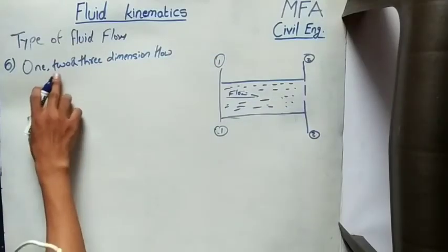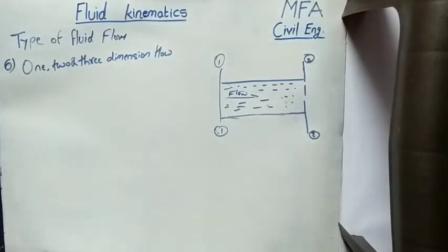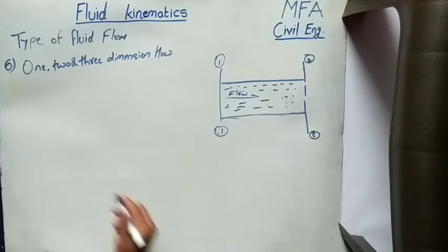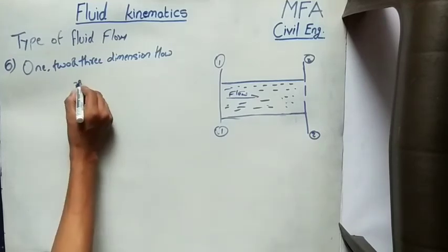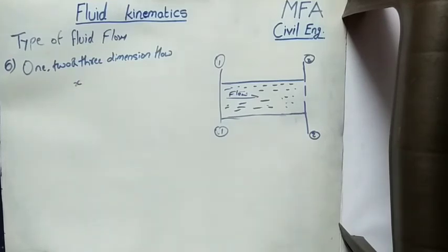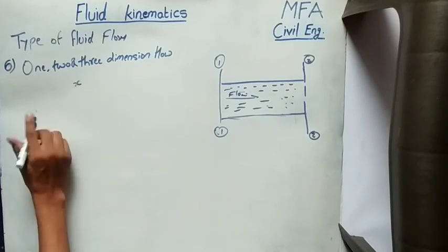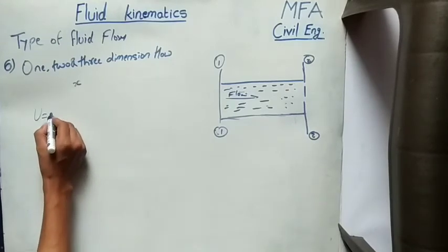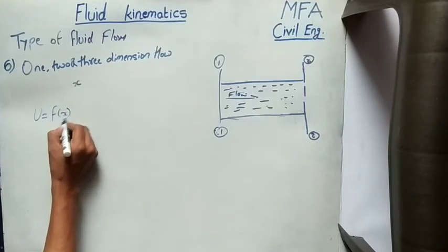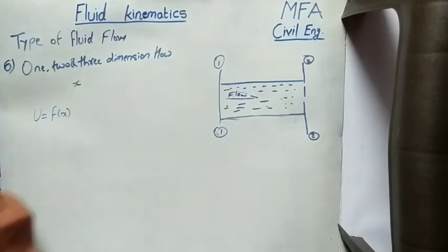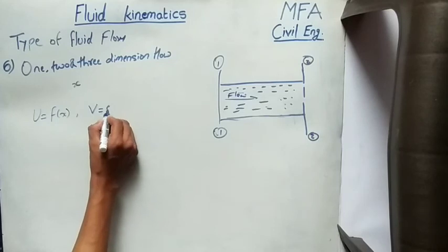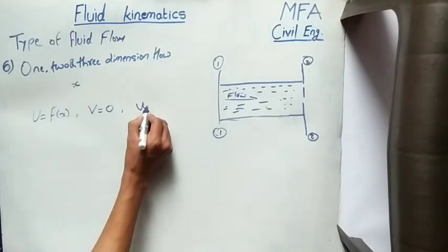Sixth is one-, two-, and three-dimensional flow. One-dimensional flow is that type in which the flow parameter, such as velocity, is a function of time and one space coordinate, say x. The velocity variation in the other two directions is considered negligible. Mathematically, u (velocity component in one direction) equals a function of one space parameter x, and velocity in the other two directions is taken as zero.